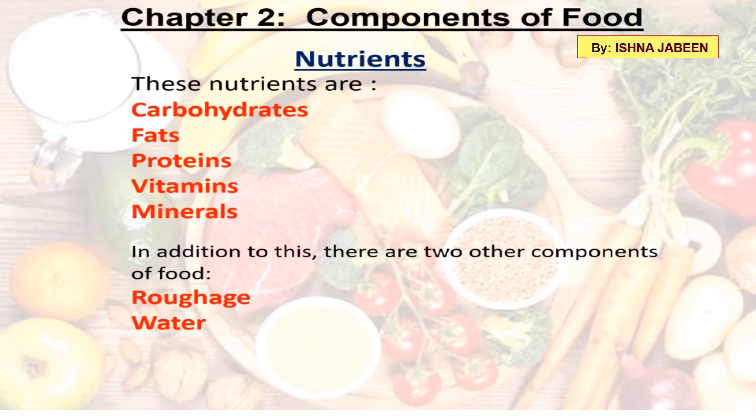These nutrients are carbohydrates, fats, proteins, vitamins, and minerals. In addition to this, there are two other components of food: roughage and water.